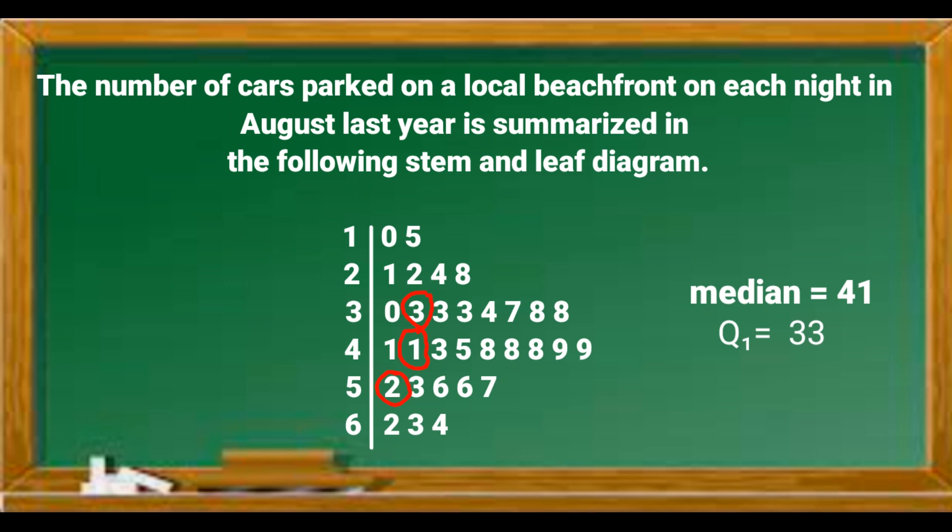The upper half also consists of 15 data samples. So we count 8 terms after the median and we will get 52. So Q3 is equal to 52.